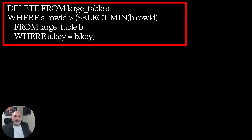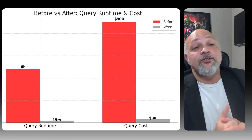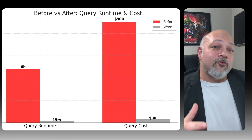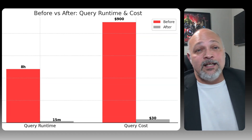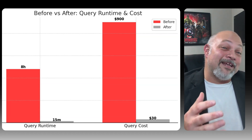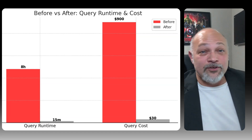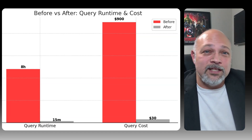Here is an example of a bad SQL query that causes O(N²) notation. Alternatively, here is a better example. On the chart, we see that runtime dropped from 8 hours to 15 minutes for the better query, and our cost dropped from $900 a night to $30 a night. This is what gets you in the room with leadership.